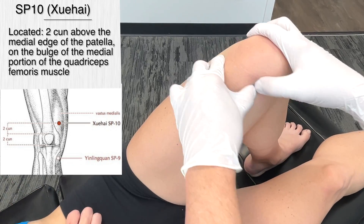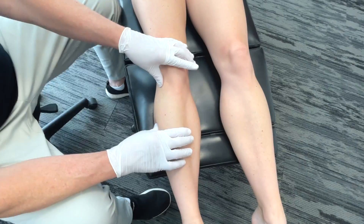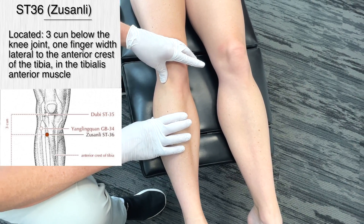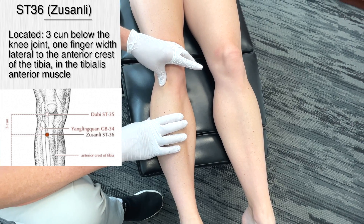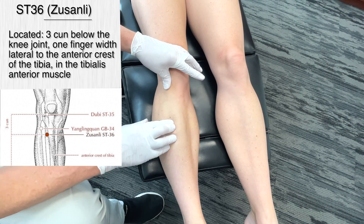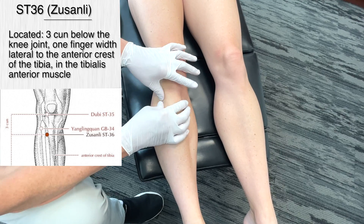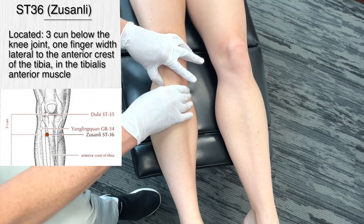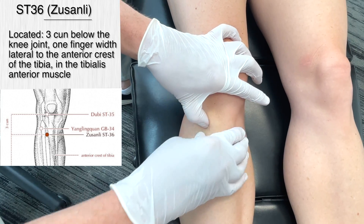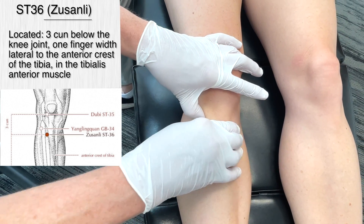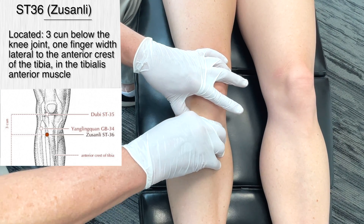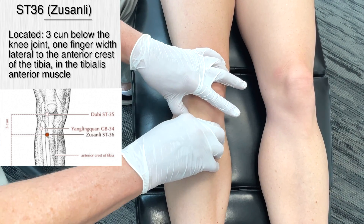That is Spleen 10. The next acupuncture point we're going to cover is Stomach 36, on the anterior aspect of the lower leg. We basically follow the tibia and fibula, take the point in between, and follow it all the way to its superior aspect. In traditional Chinese medicine, this is three cun below Stomach 35, one finger width from the anterior crest of the tibia.